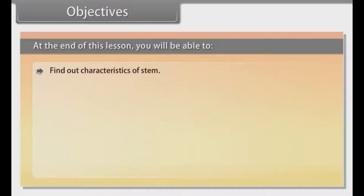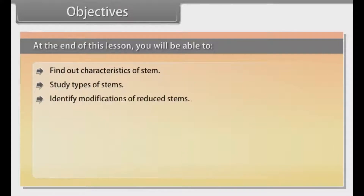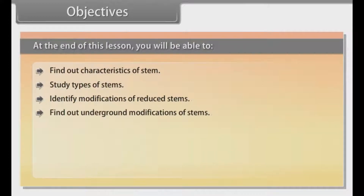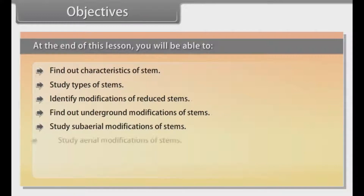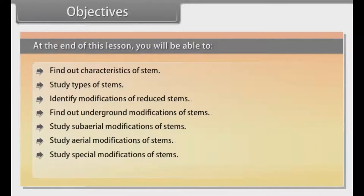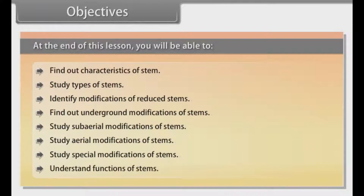At the end of this lesson, you will be able to find out characteristics of stem, study types of stems, identify modifications of reduced stems, find out underground modifications of stems, study sub-aerial modifications of stems, study aerial modifications of stems, study special modifications of stems, and understand functions of stems.